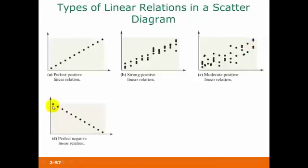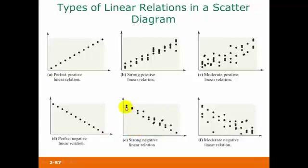Here are the other types of linear relationships we can have. This one, since we have a perfect straight line pattern but it's going down from left to right, this would be a perfect negative linear relation. Then here we have a strong negative linear relation, because the straight line pattern is still fairly obvious. And in this one, the straight line pattern is quite a bit harder to see, so this would be a moderate negative linear relation.